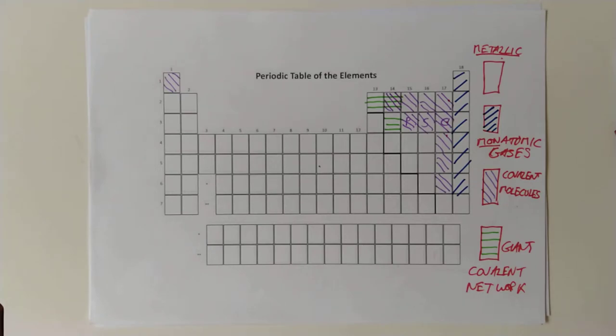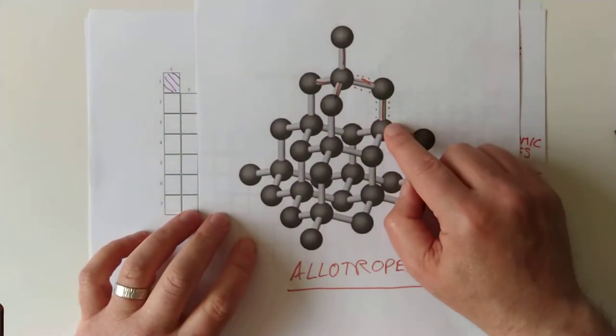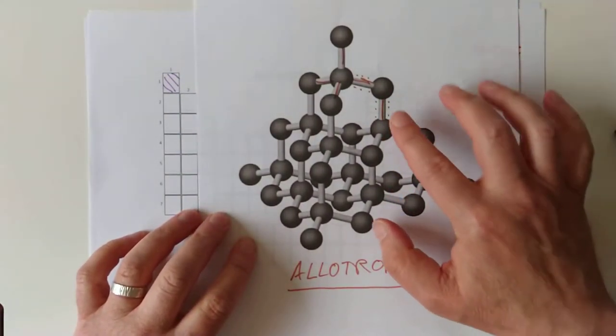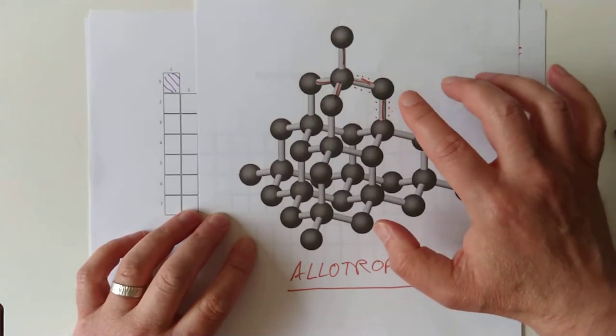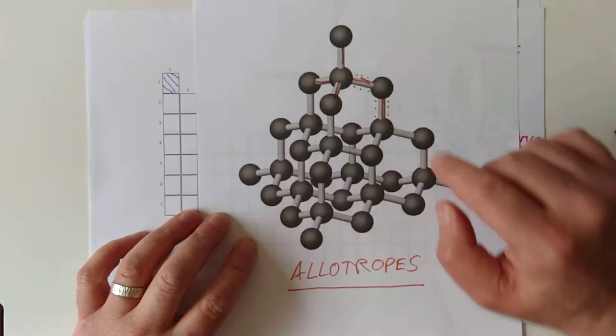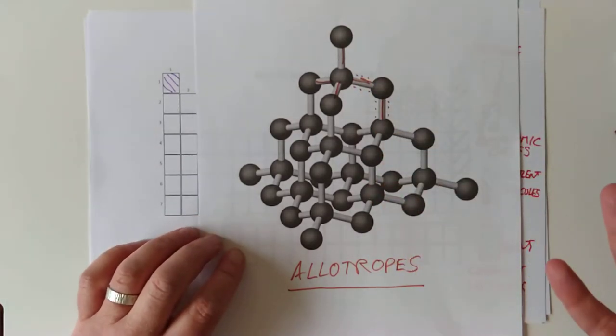So the trick question is, there are London dispersion forces and covalent bonds involved in diamond, but the only one that affects their physical properties, melting point and hardness, are the covalent bonds, not these. These are insignificant in comparison to them, even though they still exist.